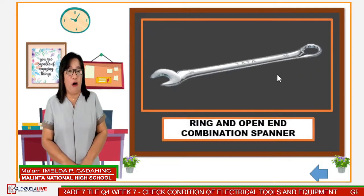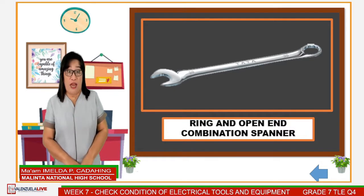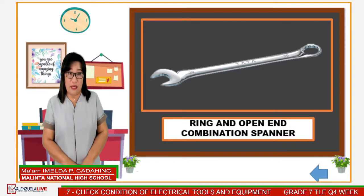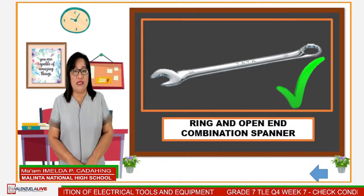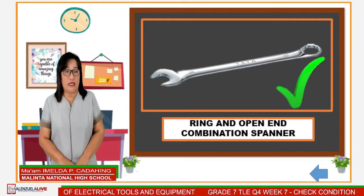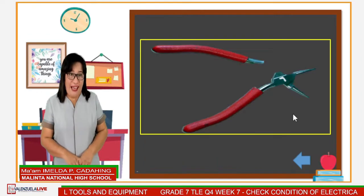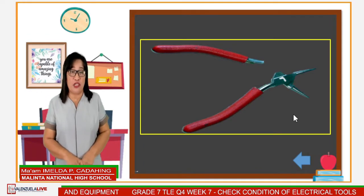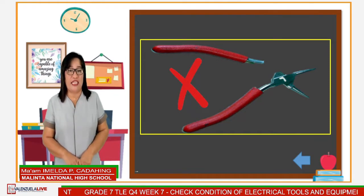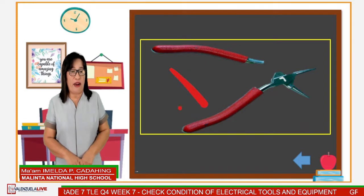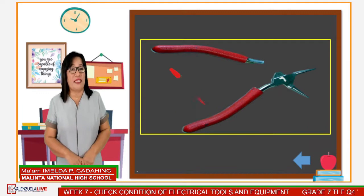Next, we have the ring and open-end combination spanner. Do you think this tool can perform its function? You got it right, dear learners, because the tool is in good condition — it is free from any damage. How about these pliers? Can these pliers be used efficiently when needed? These pliers cannot be used efficiently because their part is broken. Another great job, dear grade 7 learners.